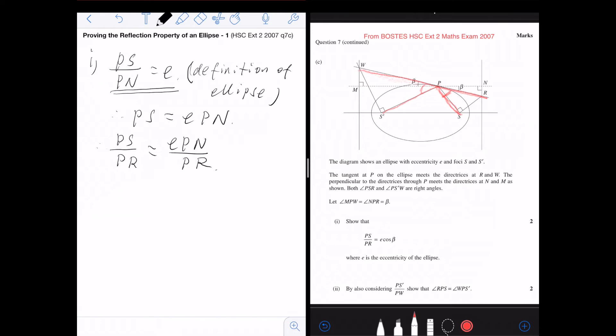And then we know in the right angle triangle PNR, we have cos beta is equal to PN over PR. In this right angle triangle PNR, that's a right angle triangle here. We have cos beta is equal to adjacent over hypotenuse.